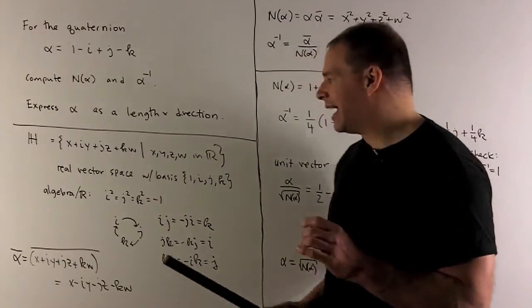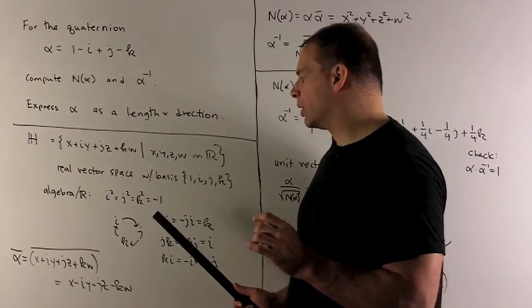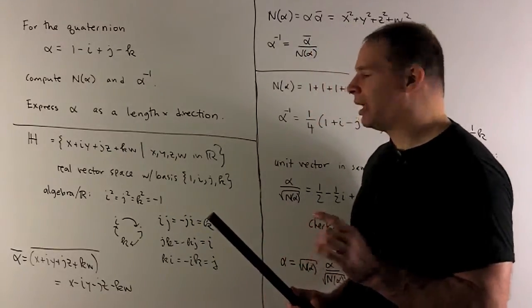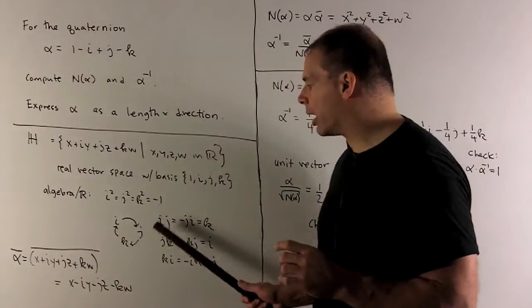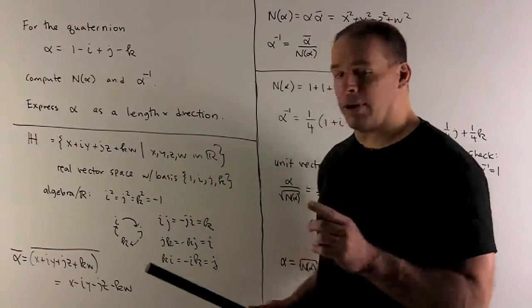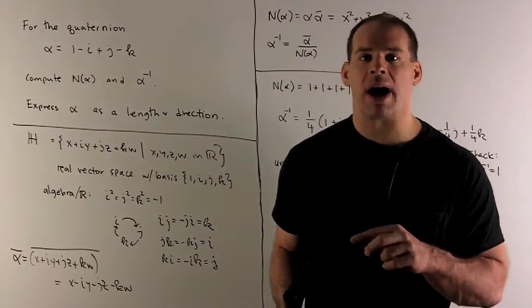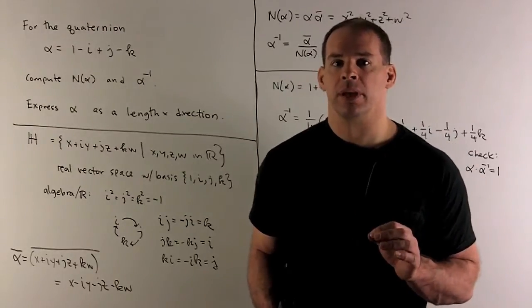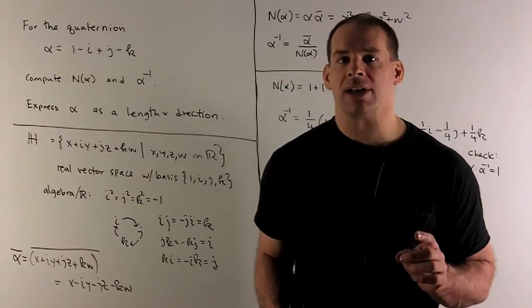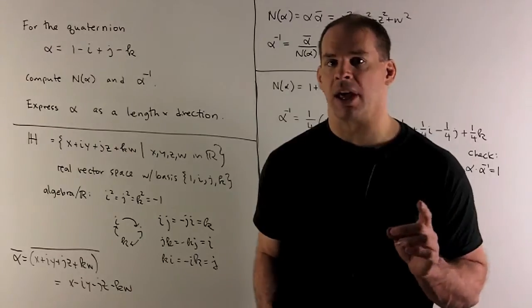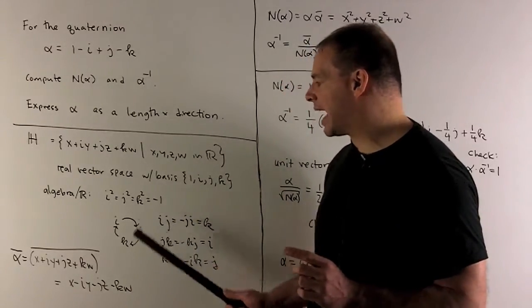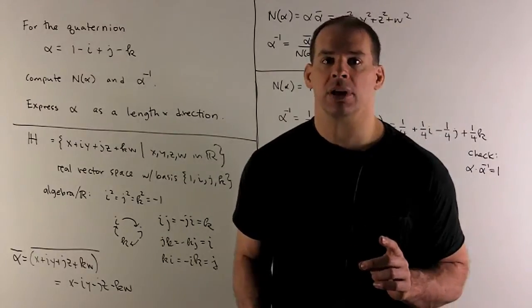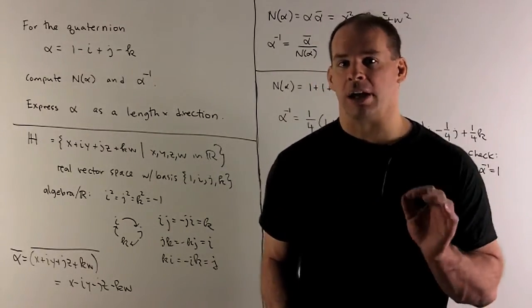Now, we'll have i squared equals j squared equals k squared equals minus 1. Then if I want to multiply any two of i, j, or k, we're going to load them into the diagram clockwise. Then if I multiply any two going clockwise, we get the third element. If we go counterclockwise, we get the third element, but with a minus sign. So i times j is k, but j times i is minus k. So quaternions are not going to be commutative.